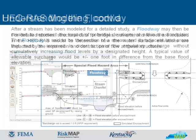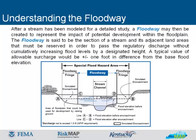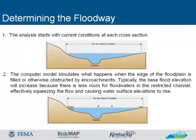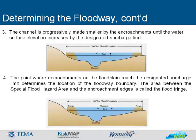After a stream has been modeled for a detailed study, a floodway may be created to represent the impact of potential development within the floodplain. The floodway is the section of a stream and its adjacent land areas that must be reserved in order to pass the regulatory discharge without cumulatively increasing flood levels by a designated height. A typical value of allowable surcharge would be plus or minus 1 foot in difference from the base flood elevation. Determining the floodway starts with current conditions at each cross-section. The computer model simulates what happens when the edge of the floodplain is filled or otherwise obstructed with encroachments. Typically, the base flood elevation will increase because there's less room for floodwaters in the restricted channel, effectively squeezing the flow and causing water surface elevations to rise. The channel is progressively made smaller by the encroachments until the water surface elevation increases by the designated surcharge limit. The point where encroachments on the floodplain reach the designated surcharge limit determines the location of the floodway boundary. The area between the special flood hazard area and the encroachment edges is called the flood fringe.